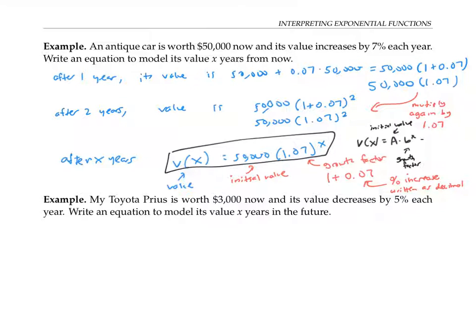But we could also write this as a times (1 + r) to the x, where a is still the initial value, but r is the percent increase written as a decimal.